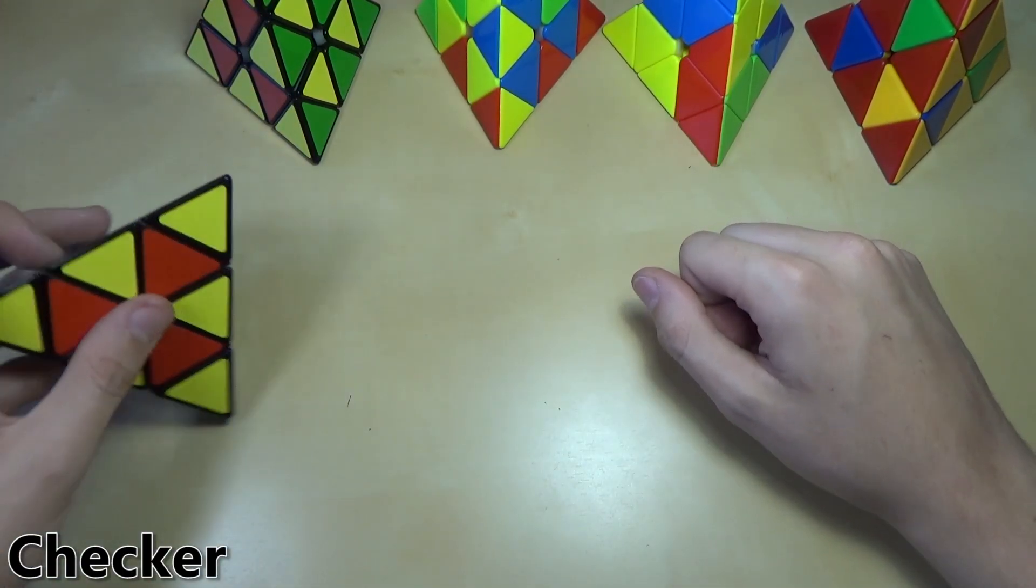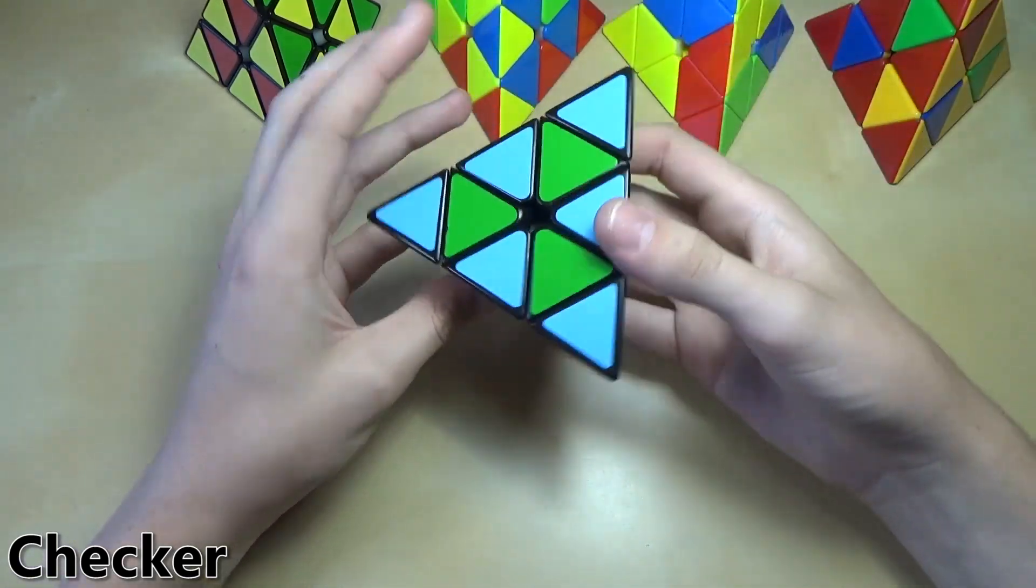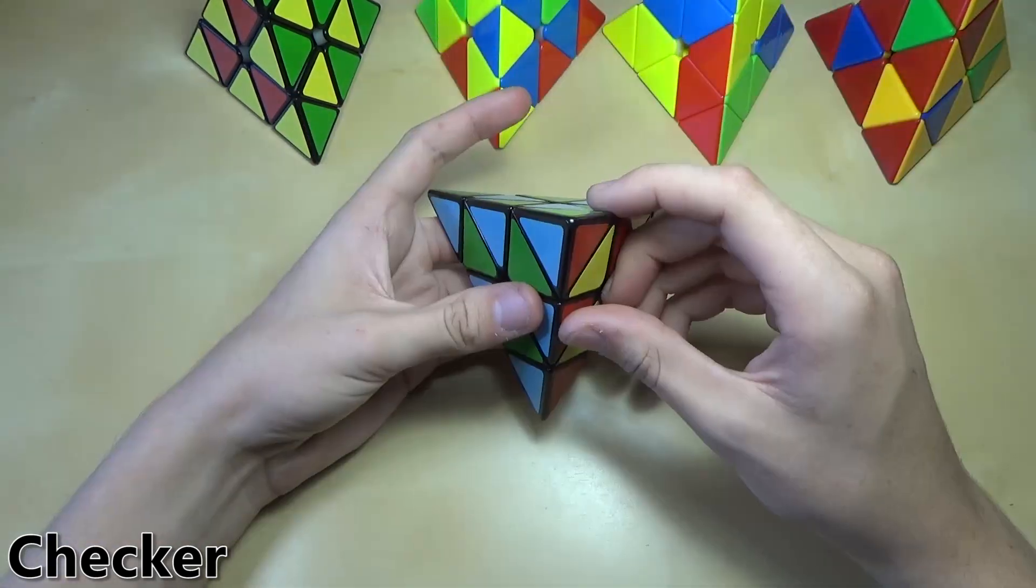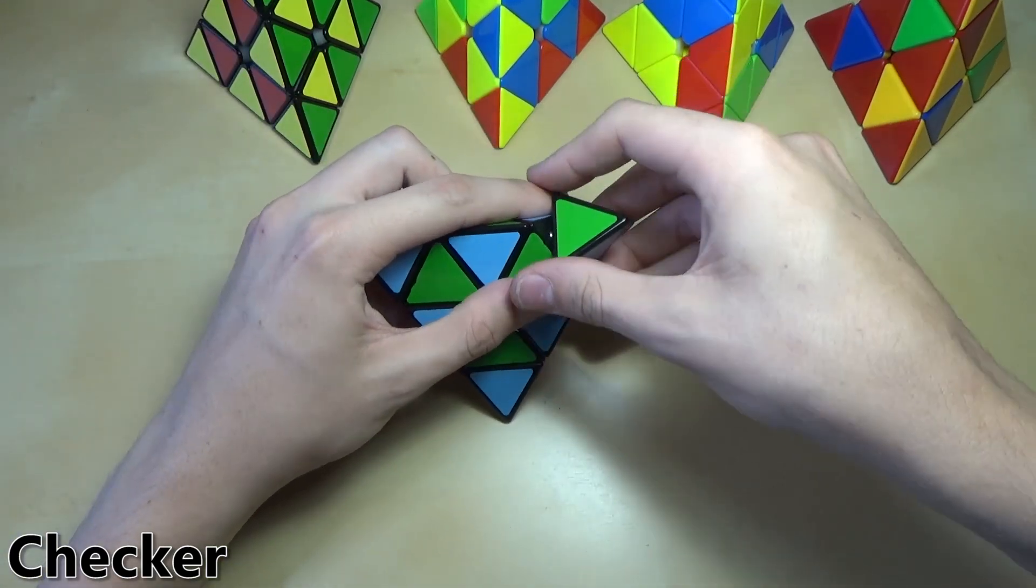First up we have the normal checker pattern. What this pattern does is it switches some of the colors on these two faces and these two faces. In order to do this pattern and the next pattern, you'll have to take off the tips of your Pyraminx.